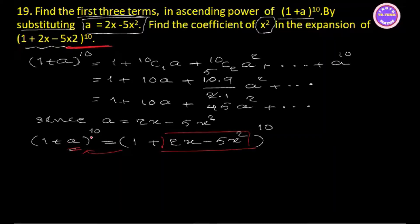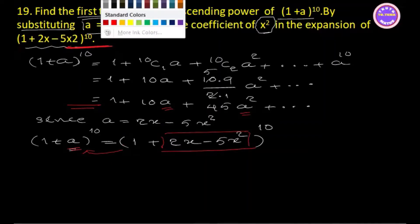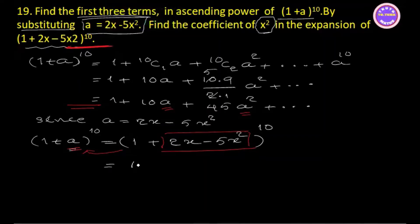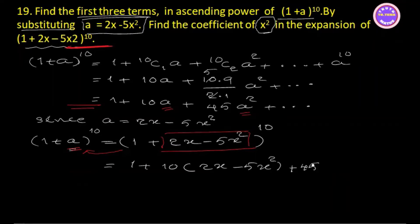1 plus x to the 10, which is 2x minus 5x squared. Now let's see what we have: 1 plus 10 times (2x minus 5x squared) plus 45 times (2x minus 5x squared) the whole square, plus and so on.